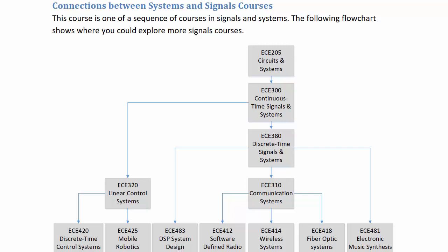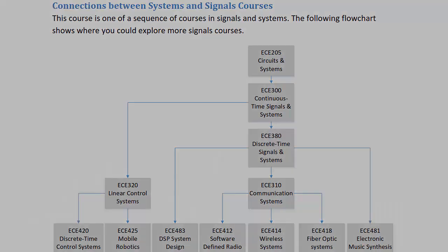Alternatively, you could take the discrete time signals and systems route and take ECE 380, which leads to ECE 483 DSP System Design, ECE 310 Communication Systems, or ECE 481 Electronic Music Synthesis. After Communication Systems, you could take Software Defined Radio, Wireless Systems, or Fiber Optic Systems.